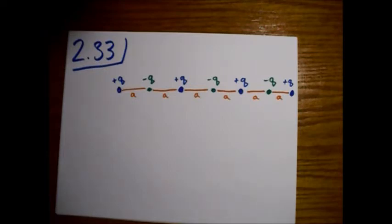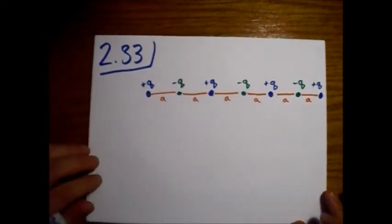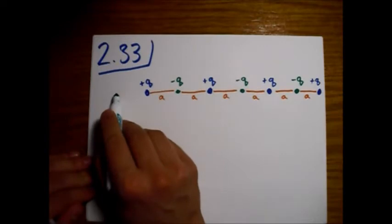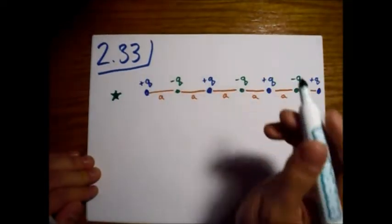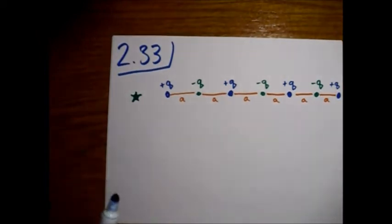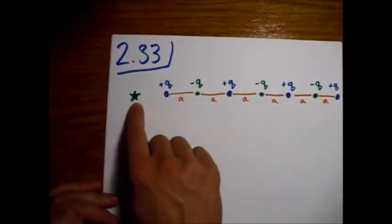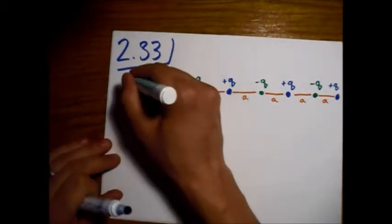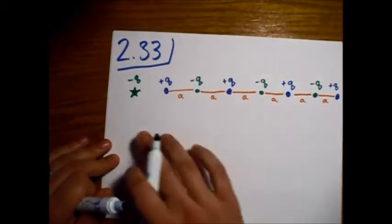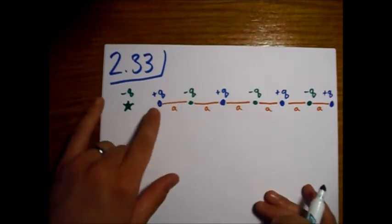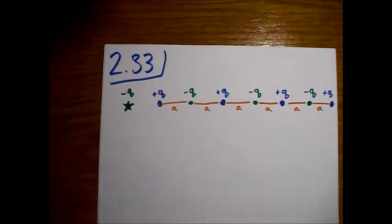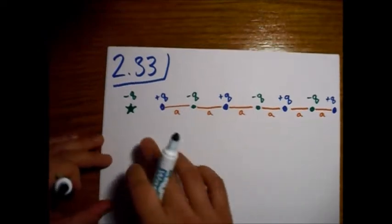So what we want to do is bring in another charge right here. I'll make this one a star, so that we can see how much work does it take to bring a charge of minus Q right here. It can be a minus Q or, I mean, it doesn't matter the colors. You'd get the same answer whether I'd put a minus Q.